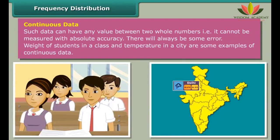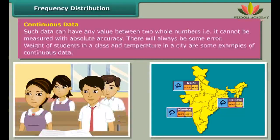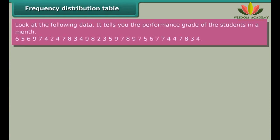Continuous data: Such data can have any value between two whole numbers, that is it can be measured with absolute accuracy. There will always be some error. Weight of students in a class and temperature in a city are some examples of continuous data.